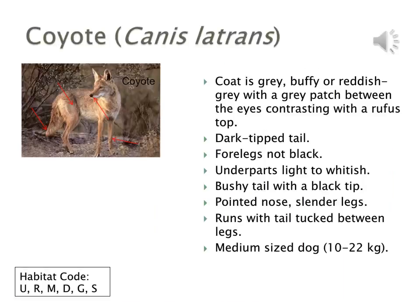The coyote is smaller than the wolf, leaner in appearance, and gray, buffy, or reddish in colour. The tail is dark-tipped at the end, and the underparts are light to whitish. It has a bushy tail and runs with its tail tucked between its legs, which is a notable feature when on the move. It weighs between 10 to 22 kilograms.